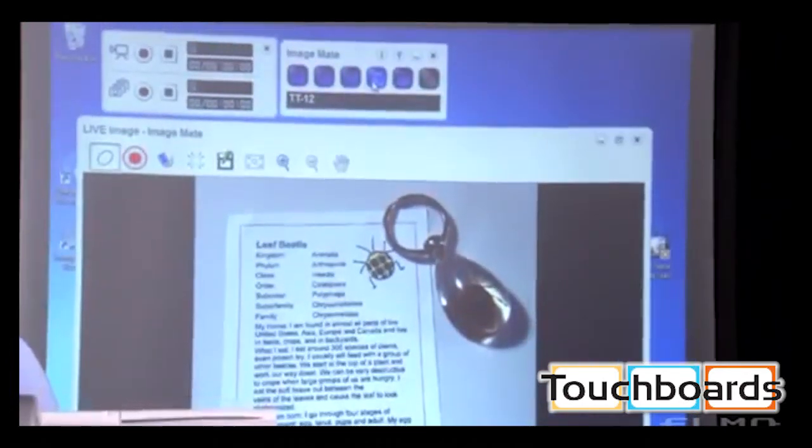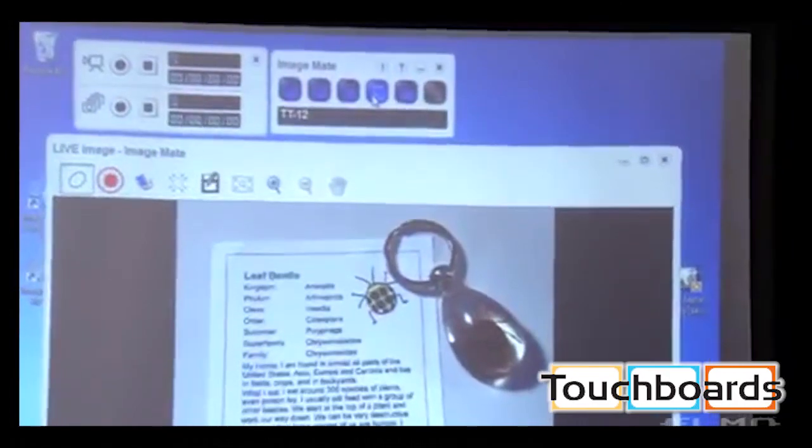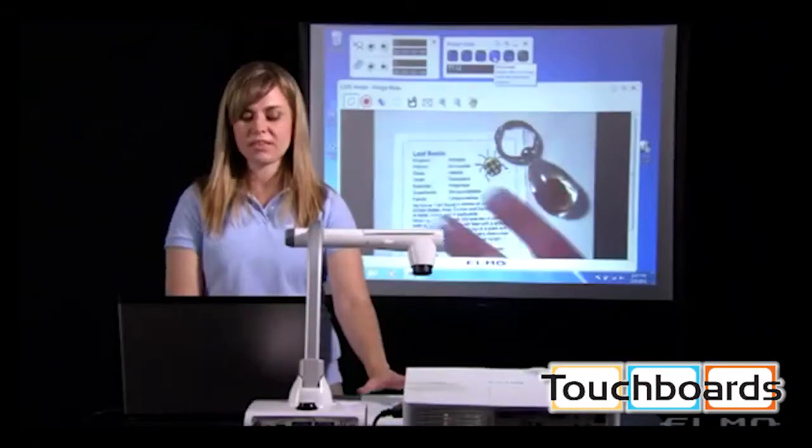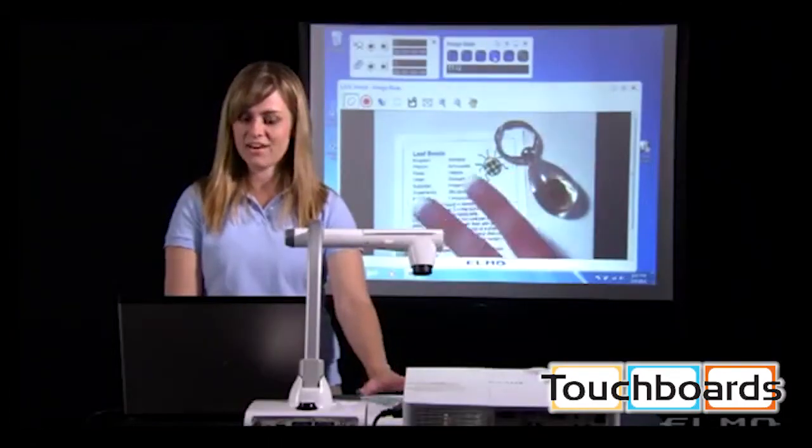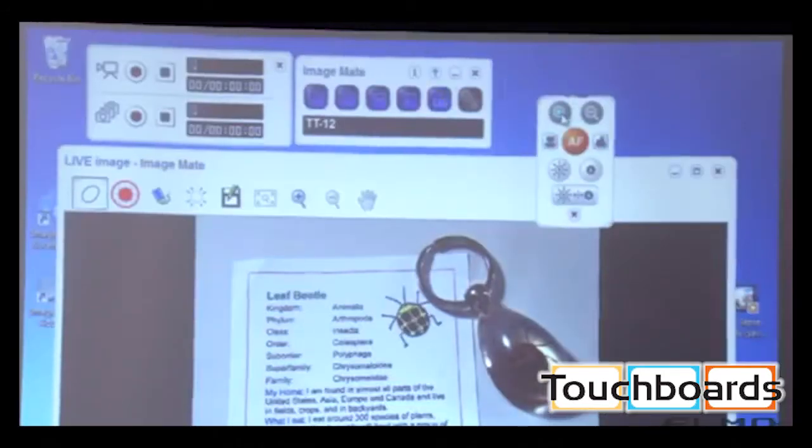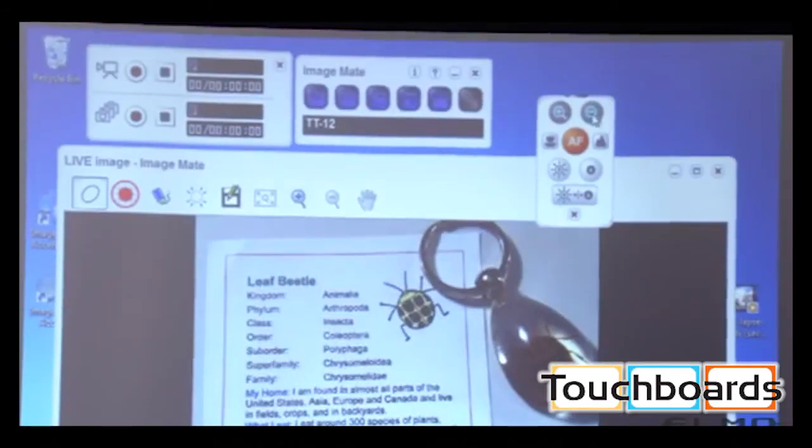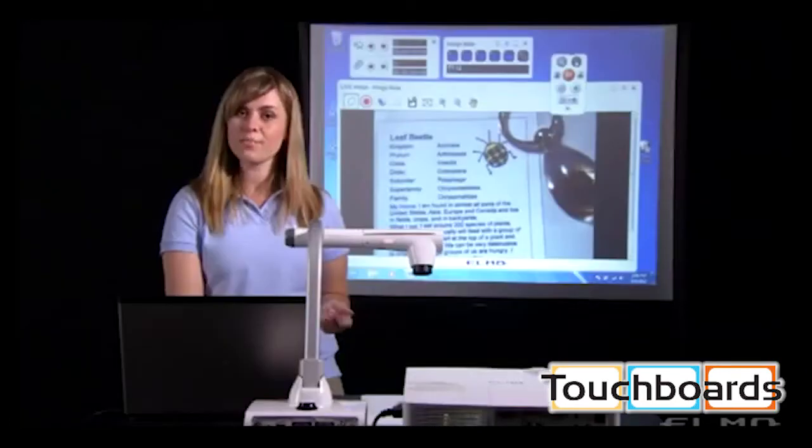So next to the video recording icon, we have a live image icon. And this will just bring up the live image, which is what we're looking at now. And next to that is a remote control, so you can control the document camera from your computer screen.